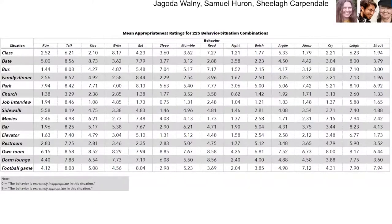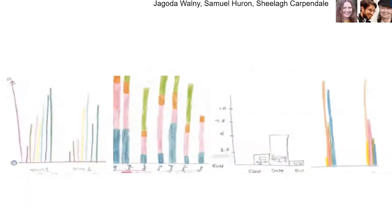As normal, we ran a study. We gave people this really charming data set about appropriateness of behaviors in given situations—like whether it's appropriate to kiss in church or in a job interview, and where it's okay to burp, and things like whether jumping and running and crying are appropriate. It's an amusing data set—might as well make it amusing for our participants.